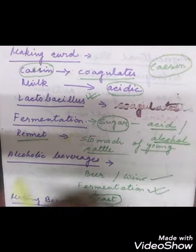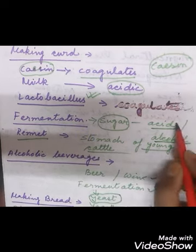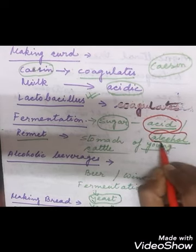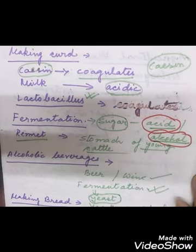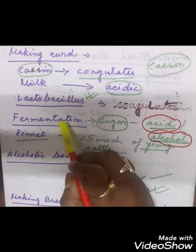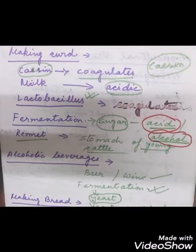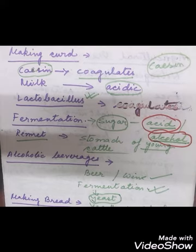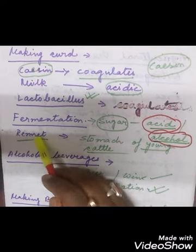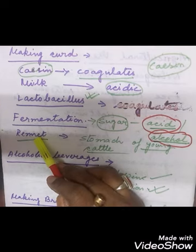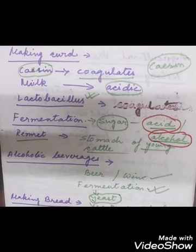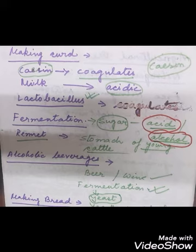This process of conversion of sugar into acid or alcohol is called fermentation. In milk, the sugar is converted to lactic acid, but in other contexts it can form alcohol. For making cheese, a substance from the stomach of young cattle called rennet is used to speed up the process. Addition of rennet results in the formation of lactic acid, which helps in the formation of cheese.